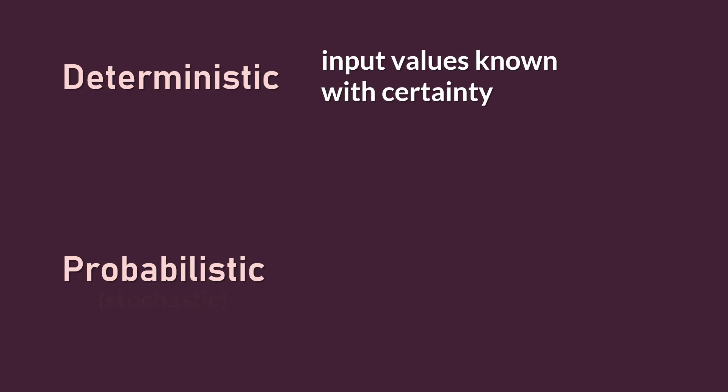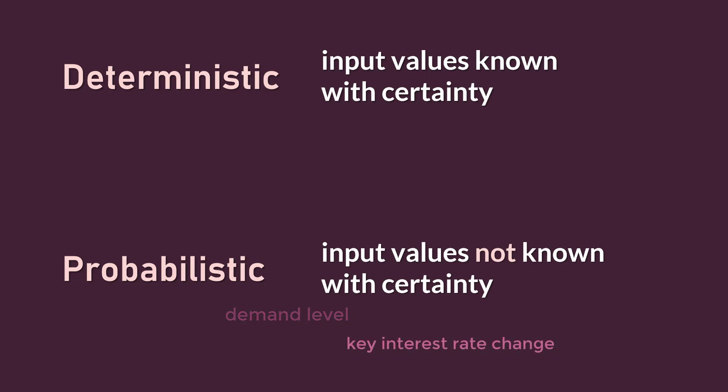On the other hand, probabilistic or what we also call stochastic models have uncertain input values or data. For example, how many units are customers going to buy this week? Is the government going to raise key interest rate? Is the economy going to be stable, or will there be a recession next quarter? In a sense, the input values can only be estimated with some probability.